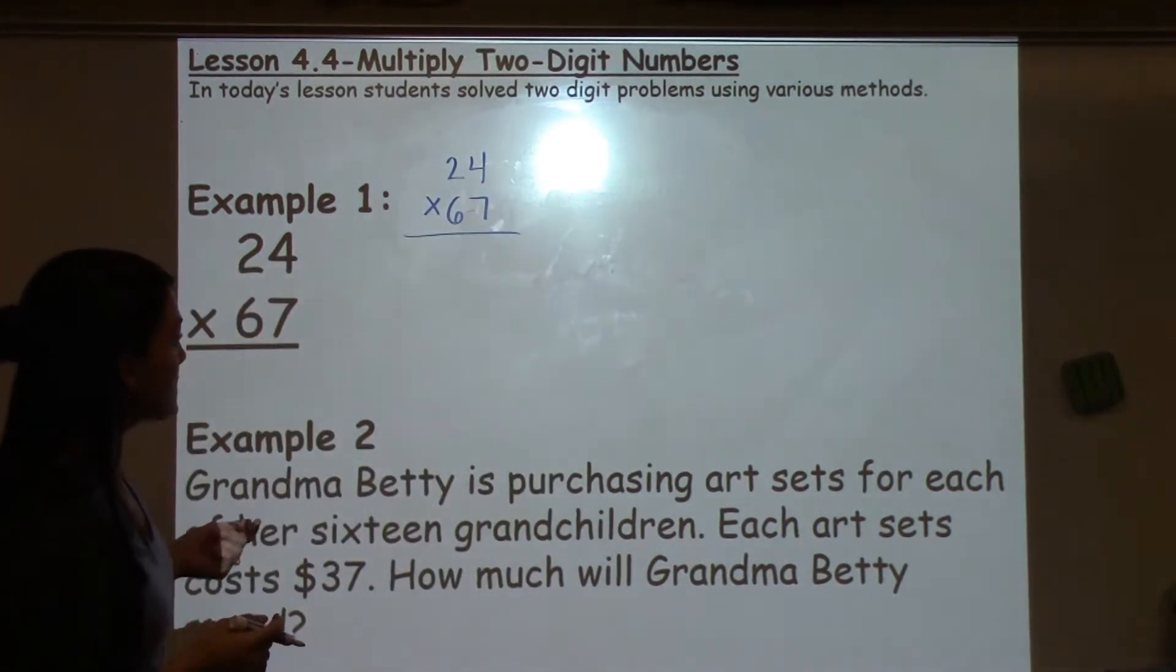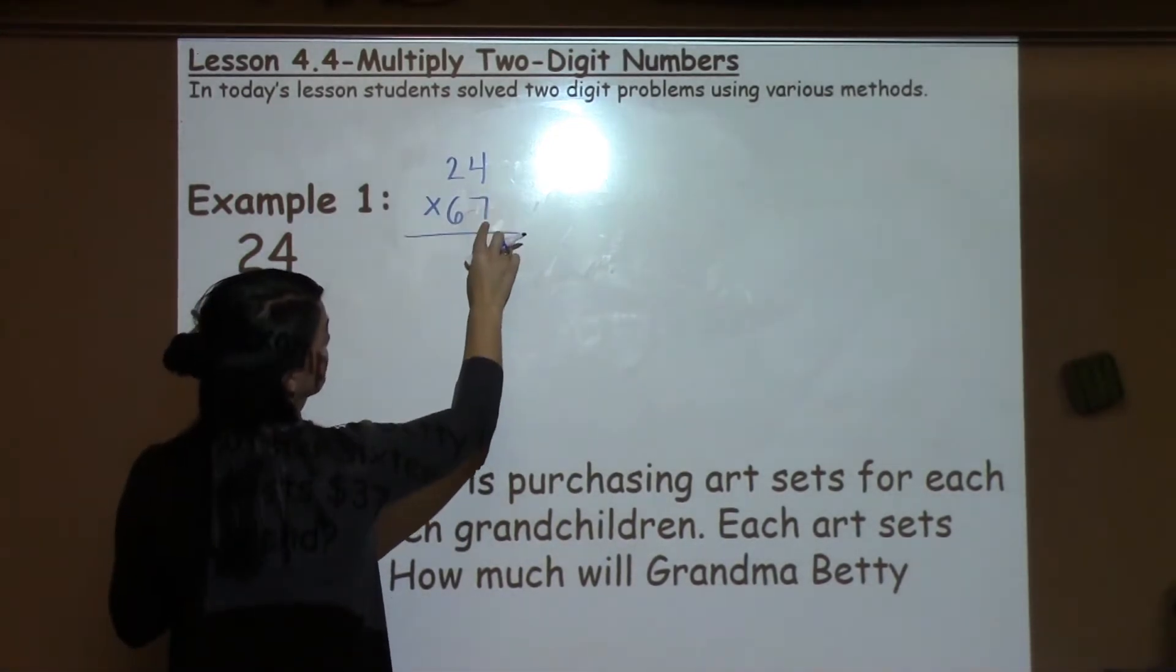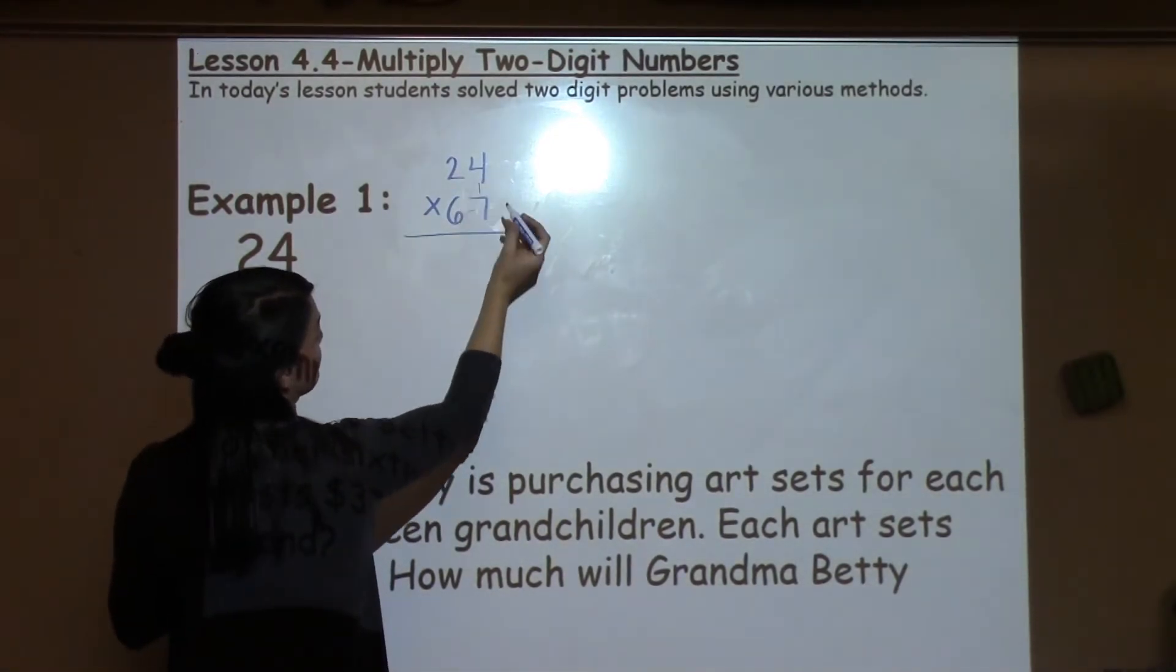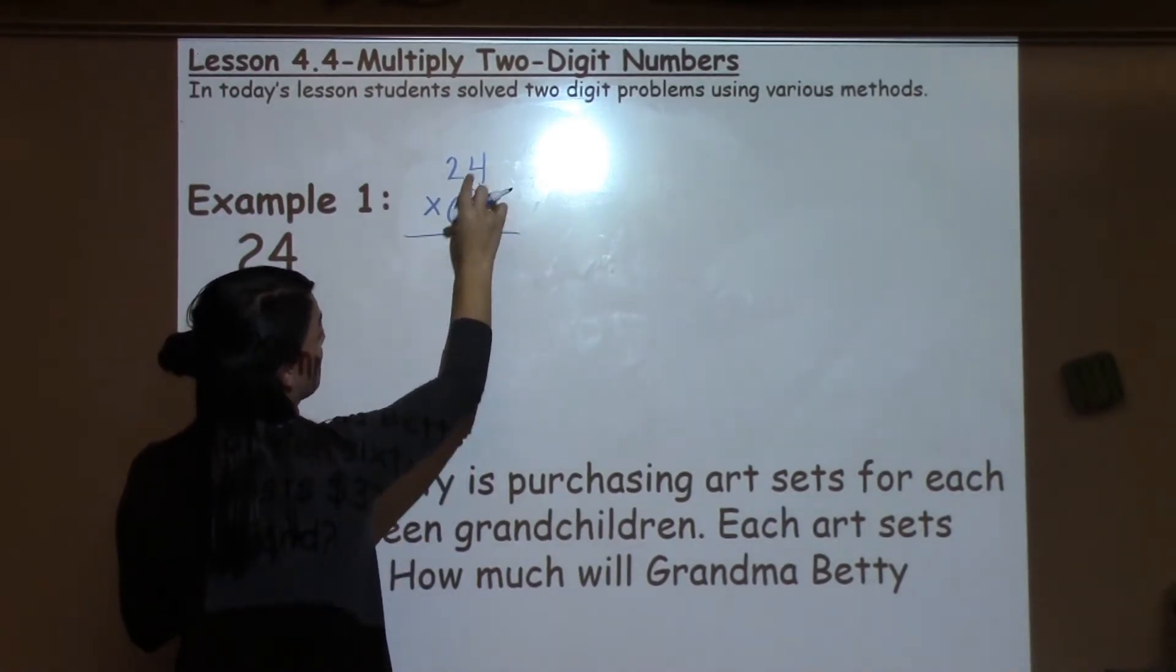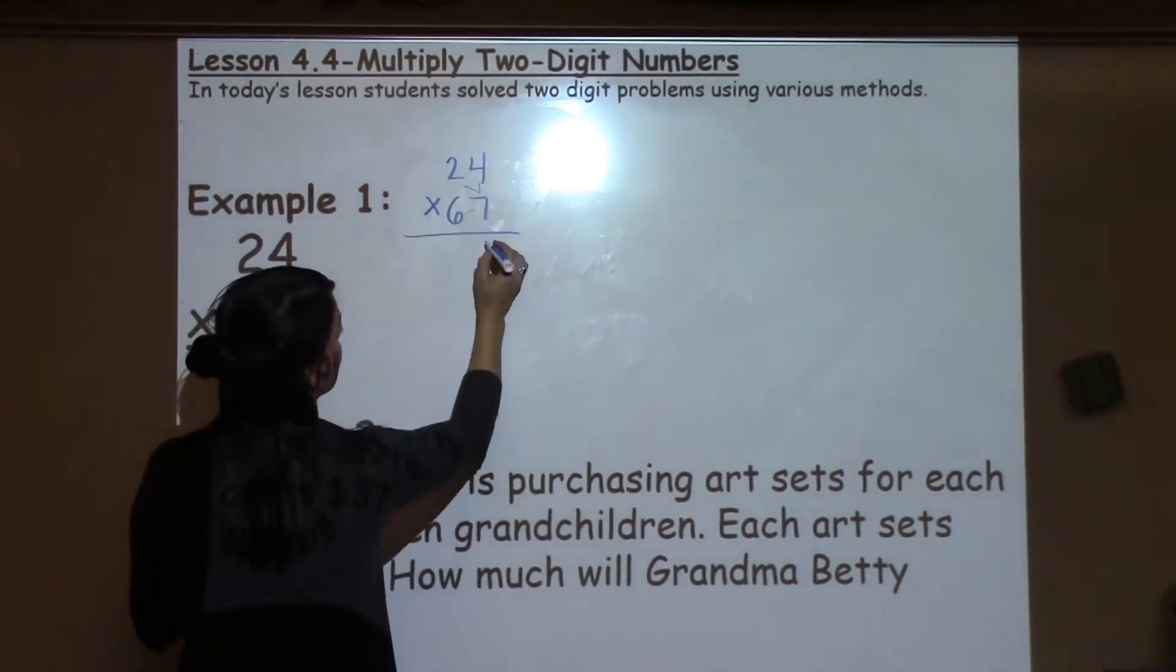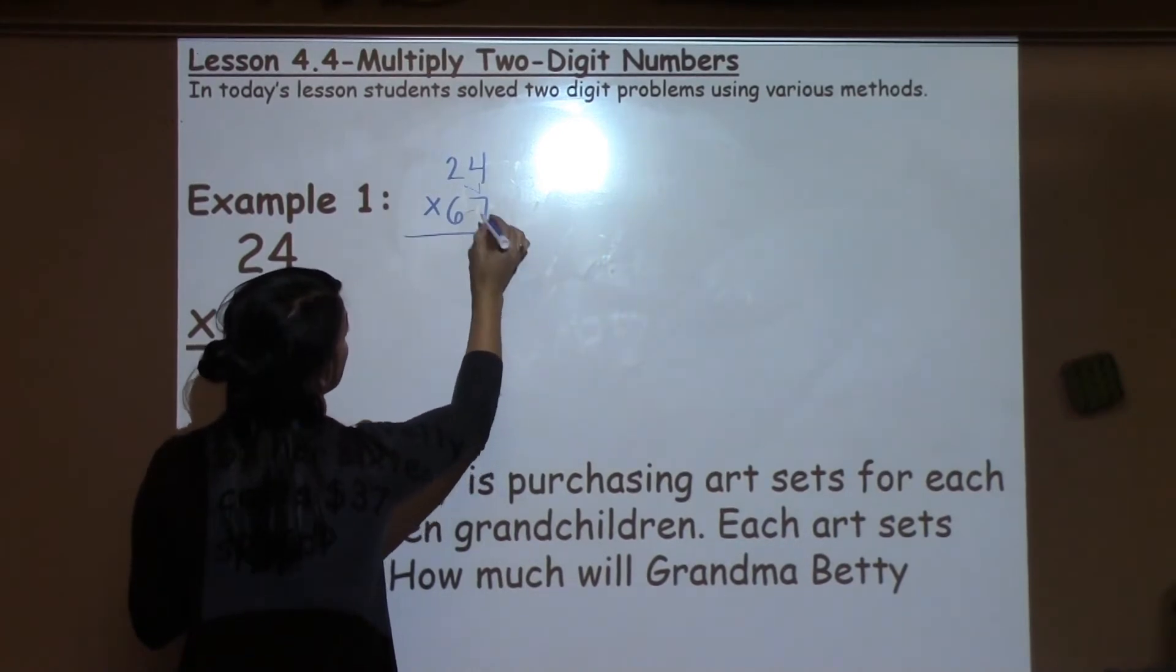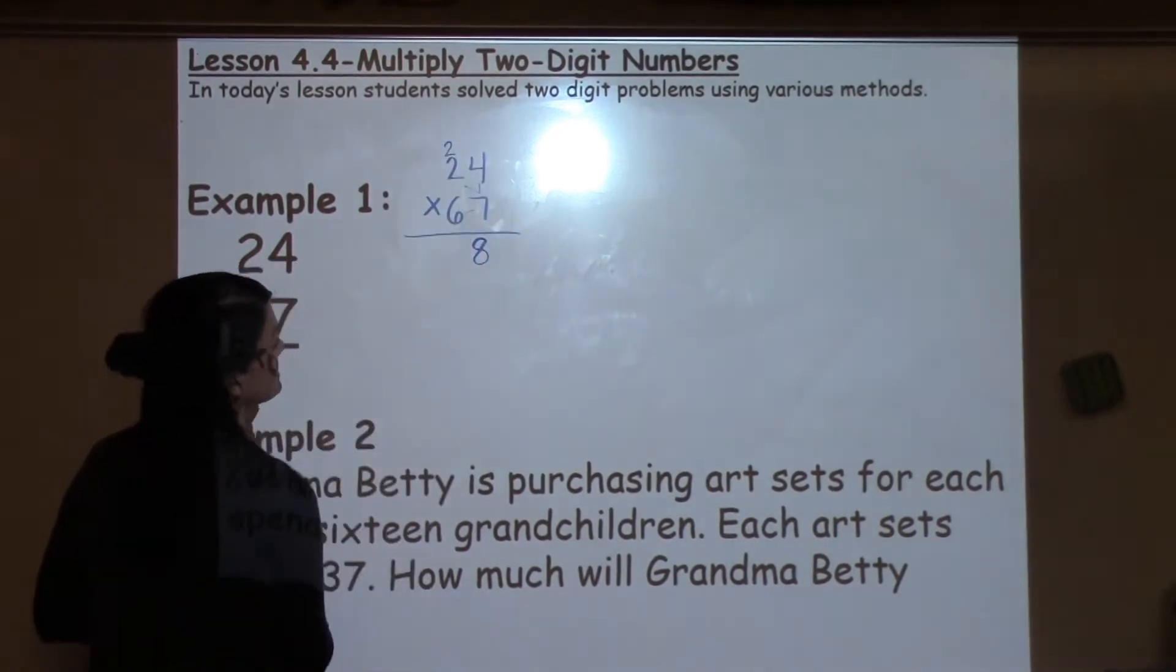Now, 24 times 67. What we want to do is only focus on the 7 first. Take 7 times the 4 and then 7 times the 2. So 7 times 4, I know, is 28. So I put my 8 down below and I carry my 2 up top.